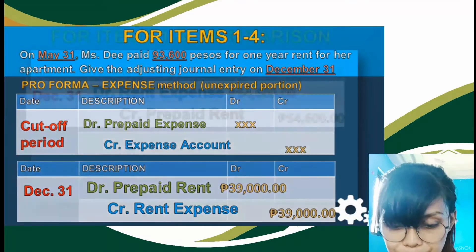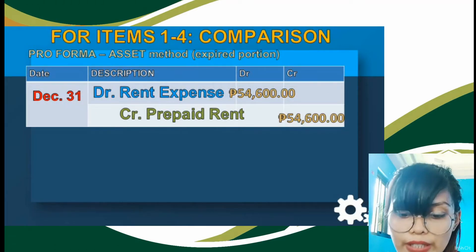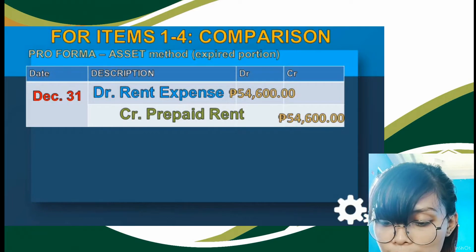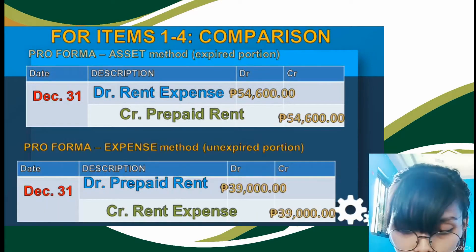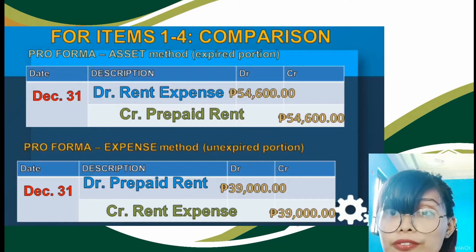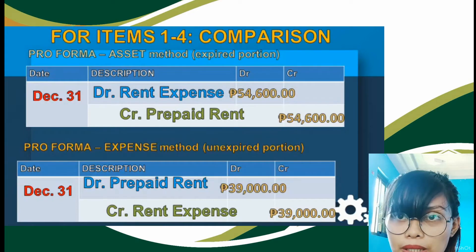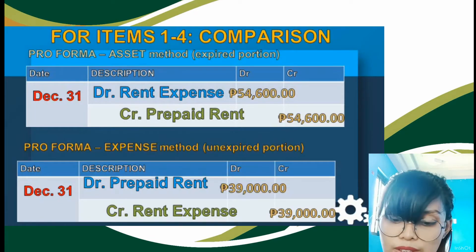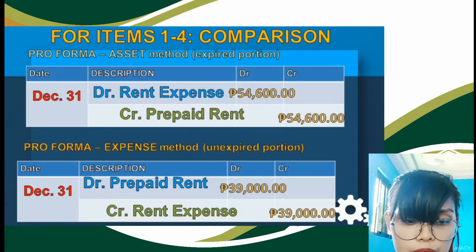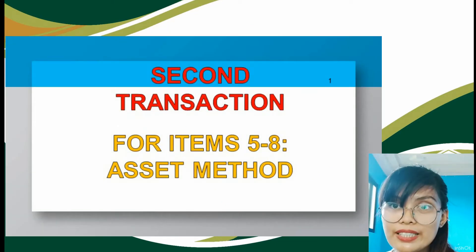To compare: for asset method, we have debit rent expense and credit prepaid rent, both at P54,600. For expense method, we have debit prepaid rent and credit rent expense of P39,000. If we add P54,600 and P39,000, we get the total payment of P93,600. Comparing both methods side by side makes it easier to answer quiz questions.